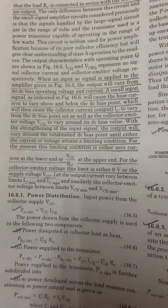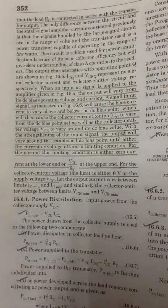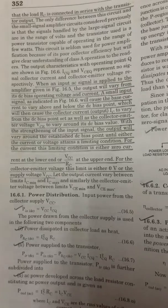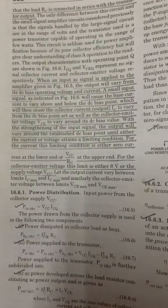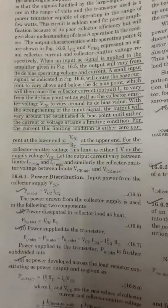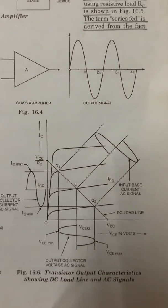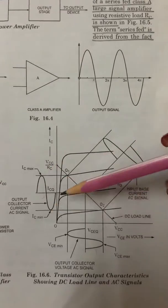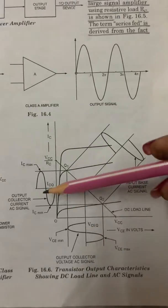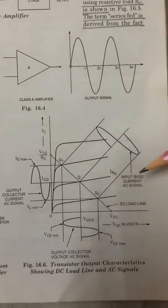The collector-emitter voltage VCE will also vary around its DC bias value. With the strengthening of the input signal, the output will vary around the established DC bias point until either the current or voltage attains the limiting condition. For the current, this limiting condition is either zero current at the lower end or VCC/RC at the upper end. For the collector-emitter voltage, this limit is either zero volts or the supply voltage VCC. The output waveform shows that the output current flows for the full cycle of the input signal.